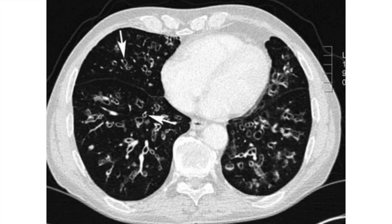Finally, this is bronchiectasis. The sign by which we can differentiate it from cysts is if you scan the CT scan, you will find some of the cysts are having a signet ring appearance — this is the presence of the pulmonary arteries accompanying the airway, giving the bronchus the appearance of a signet ring. The presence of this indicates that this is bronchiectasis and not a cyst.